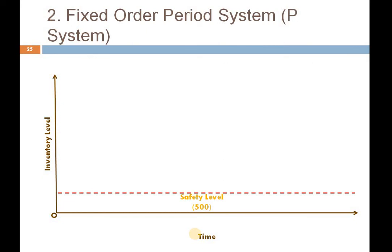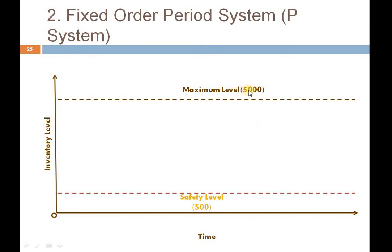The first level is the safety level — here we are considering 500 units of raw material as buffer stock. The maximum level is 5000 units. In the fixed order quantity system, there was a reorder level somewhere in between the maximum and safety level, but here there is no reorder level. The order here is based on the time factor.